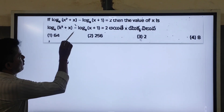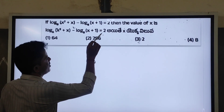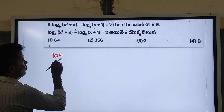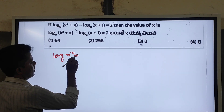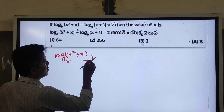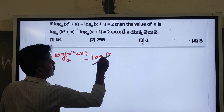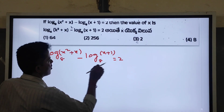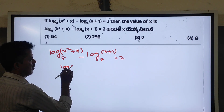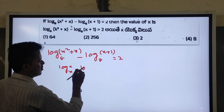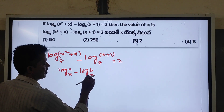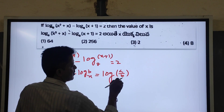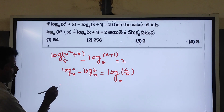log(x² + x) base 8 minus log(x + 1) base 8 is equal to x. Using the logarithm property: log a base x minus log b base x equals log(a/b) base x. So log(x² + x) base 8 minus log(x + 1) base 8 equals log((x² + x)/(x + 1)) base 8.